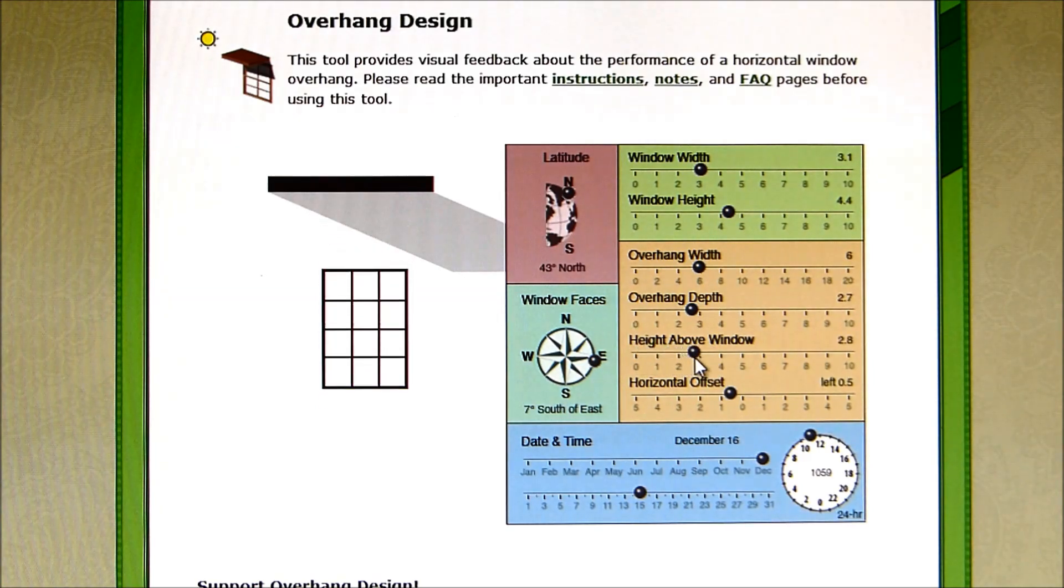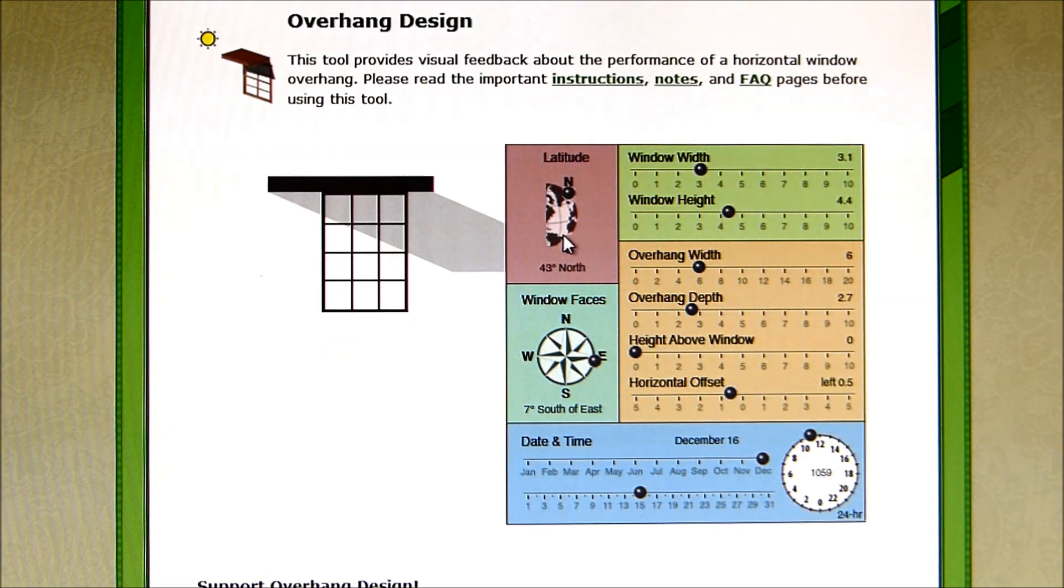If you have the windows low, then you're probably going to get a lot more sunlight than if you set the windows really high. You're going to get shading from the overhang.